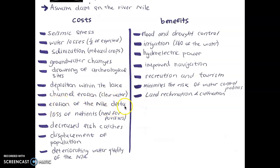Then there is erosion of the Nile Delta — about two and a half centimeters each year, which is quite significant. Loss of nutrients also causes a need for fertilizers, which is quite costly.